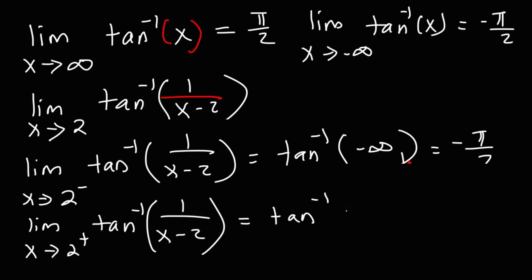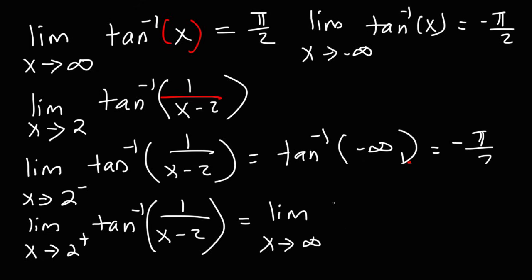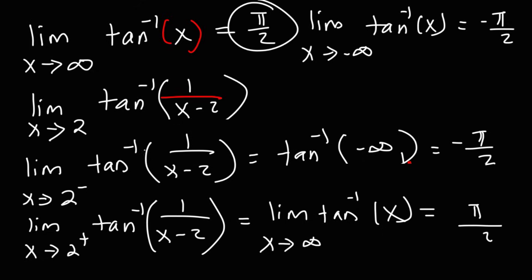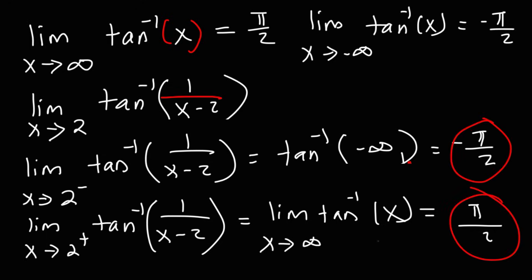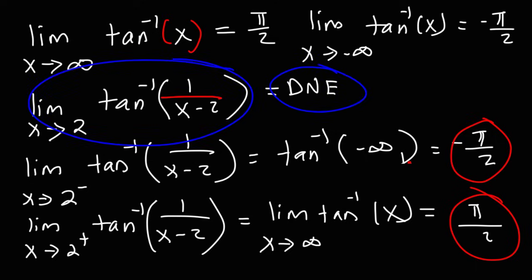So from the right side we have arctangent of positive infinity, which equals the limit as x approaches positive infinity of arctangent of x, giving positive pi over 2. Since the left-sided limit is negative pi over 2 and the right-sided limit is positive pi over 2, they are not equal, so the original limit does not exist.